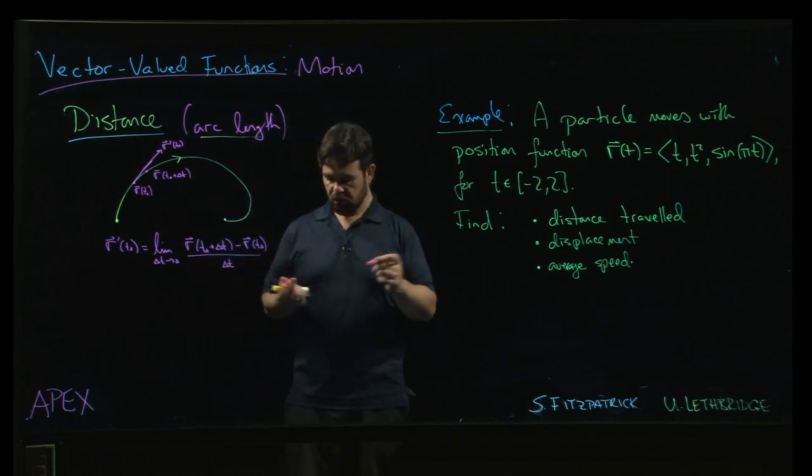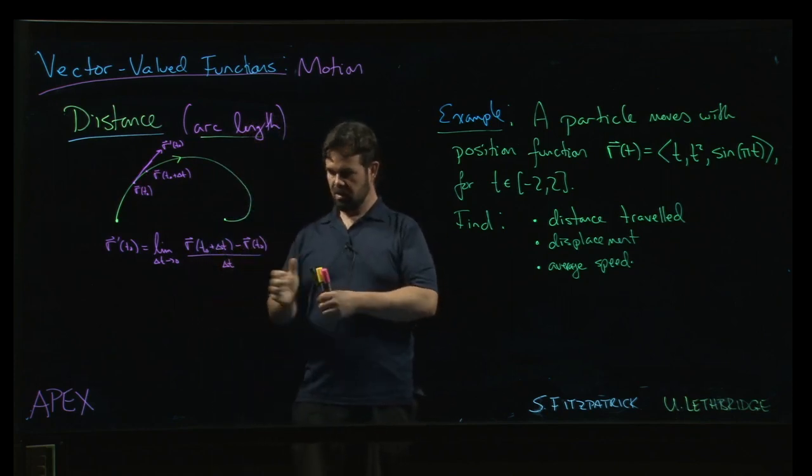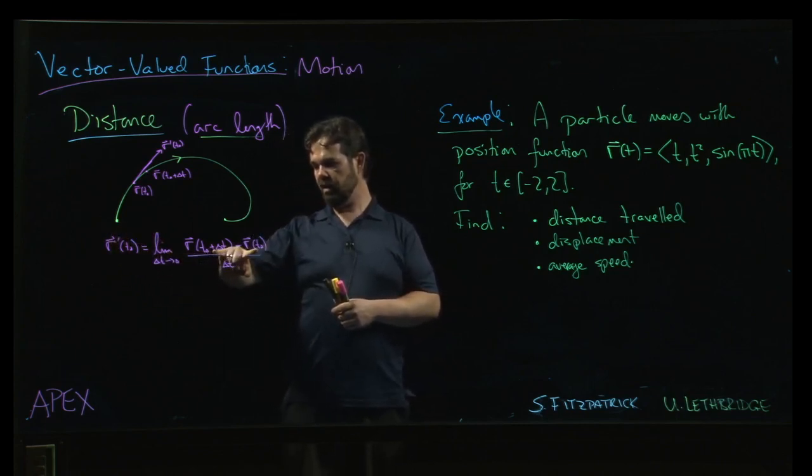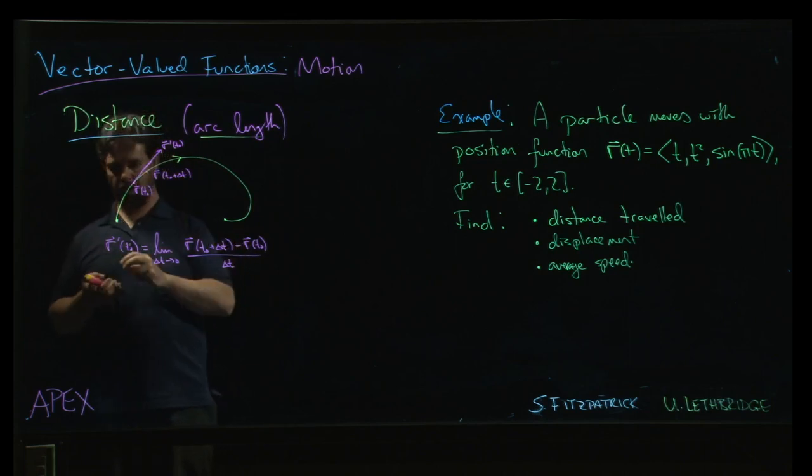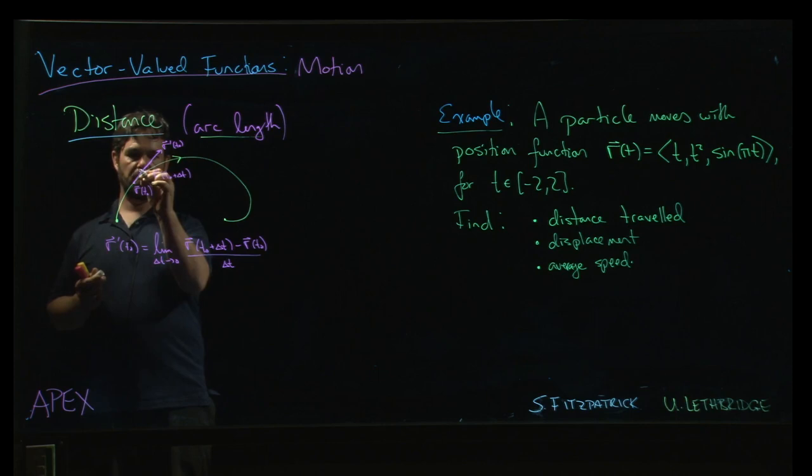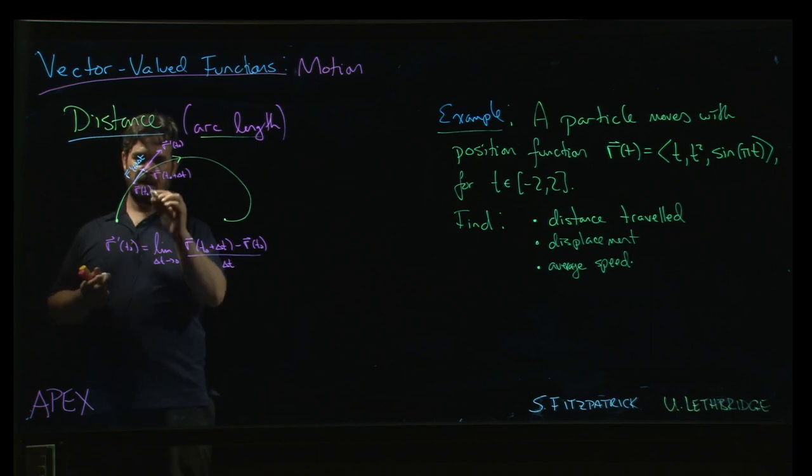And so if you drop the limit, this equality becomes an approximation. You can move the delta t to the other side. And then that displacement, which is just the vector from here to there, is approximately the same as the vector which would be right here. So this is going to be r prime at t0 times delta t. So the displacement is just the difference. The numerator here, that's the displacement.